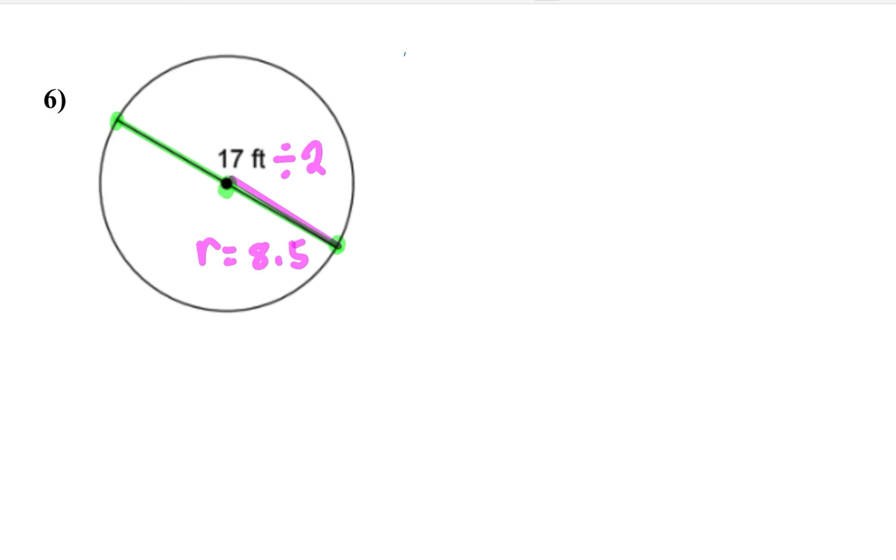So let us follow the formula that we have earlier: pi r squared. So substitute the value of the radius, which is 8.5 squared. Squaring 8.5, that is 72.25 times pi.